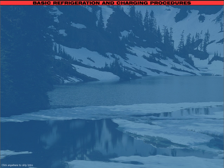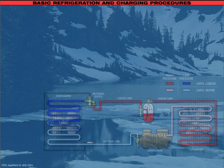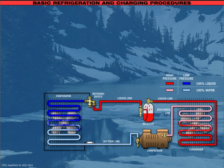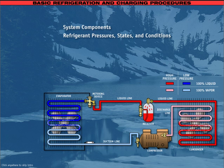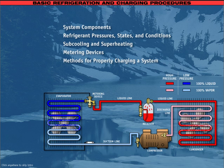Welcome to Basic Refrigeration and Charging Procedures. This program will cover many aspects of a typical vapor compression refrigeration system, including system components, refrigerant pressures, states, and conditions, sub-cooling and superheating, metering devices, and methods for properly charging a system.